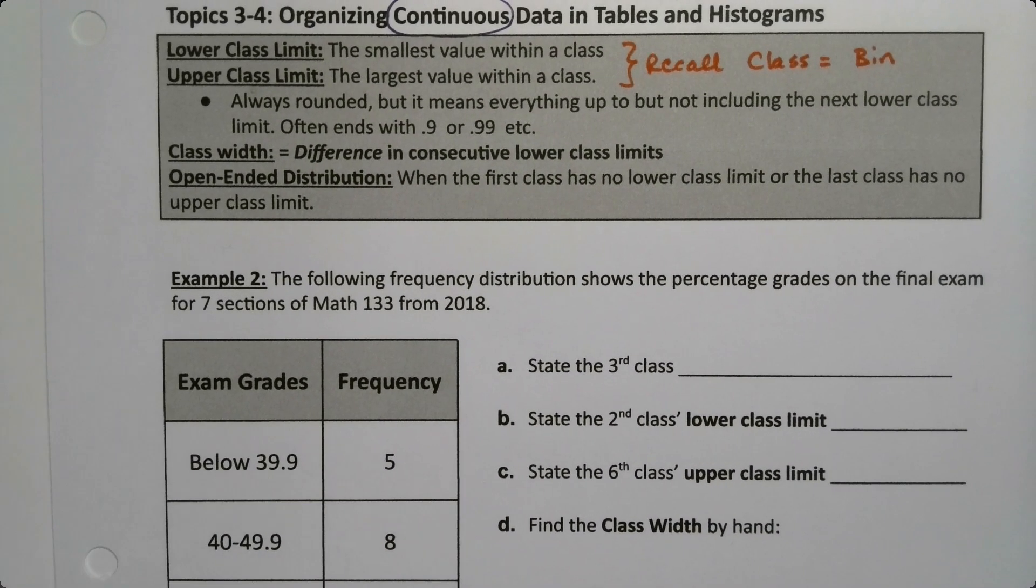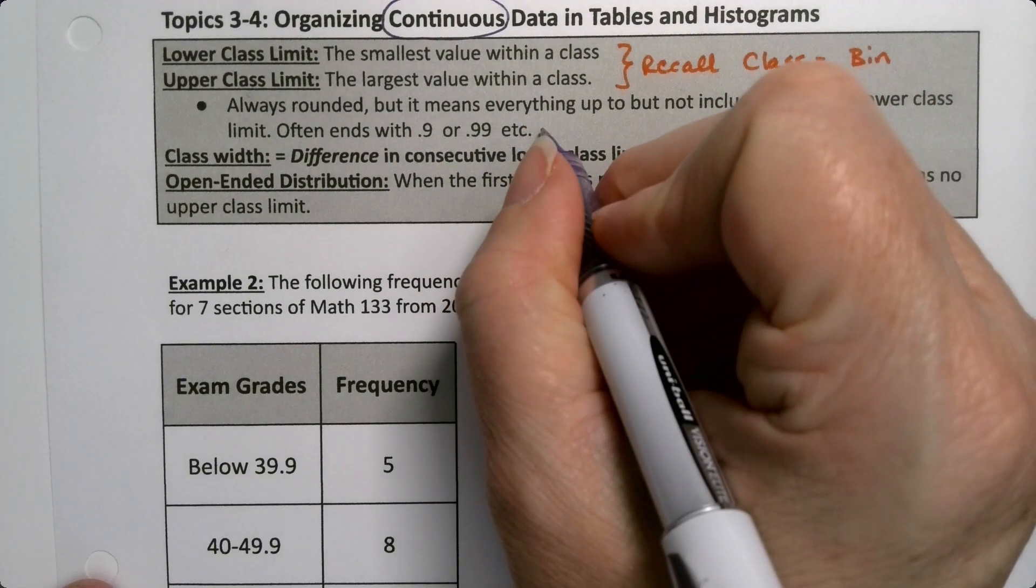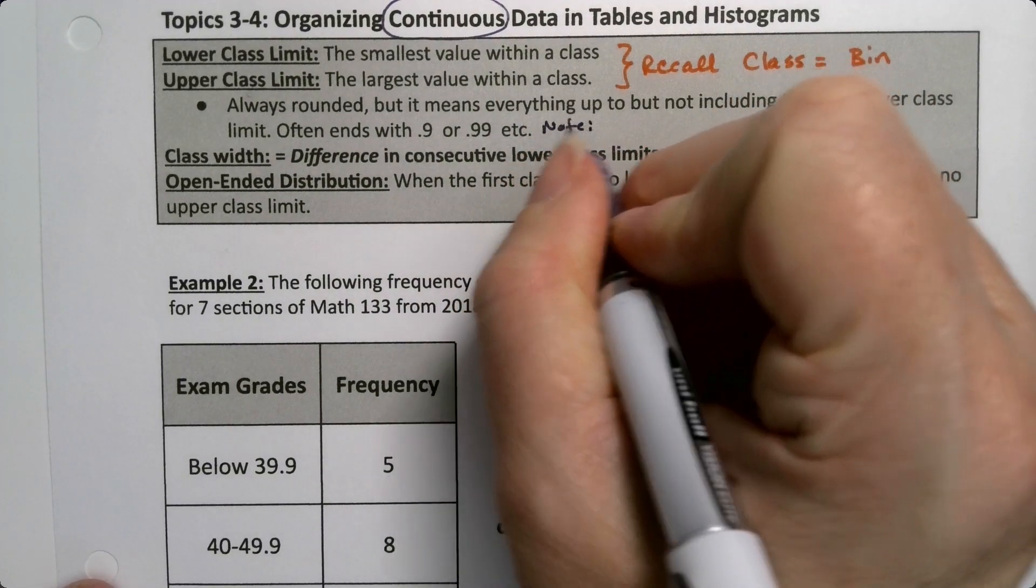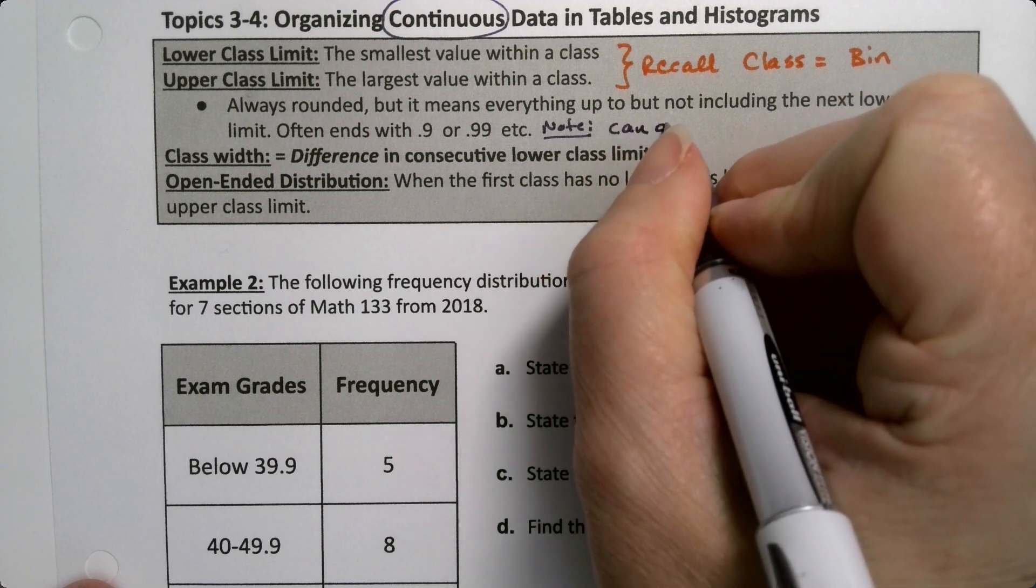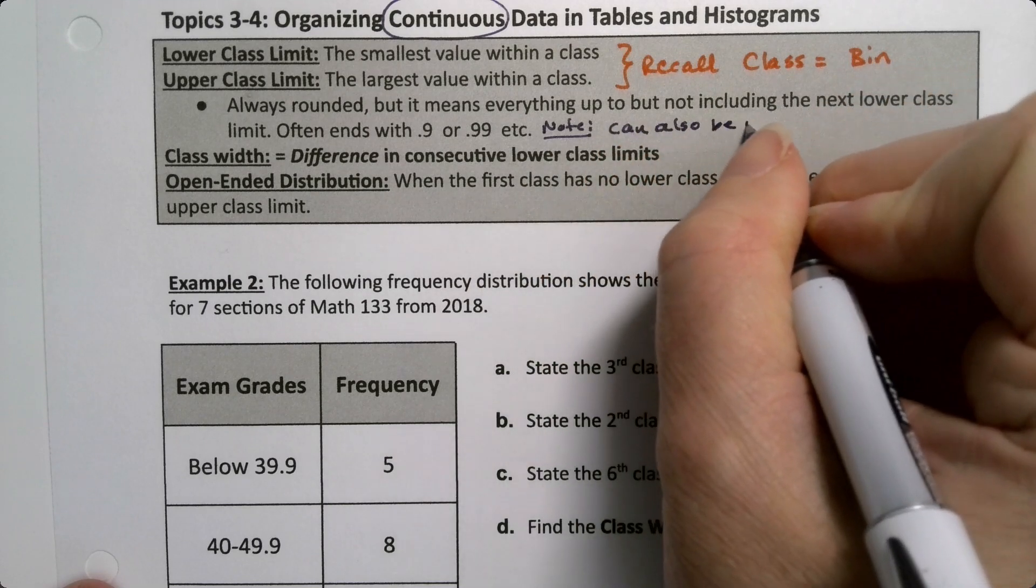So they can also be whole numbers. Note, the upper class limits can also be whole numbers. It happens.